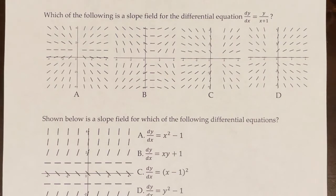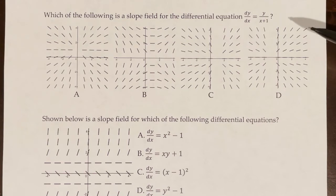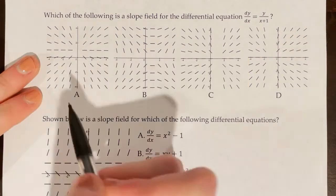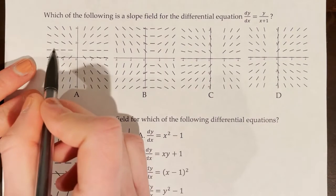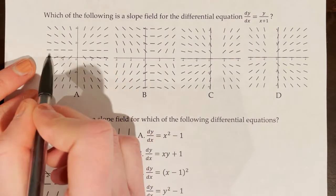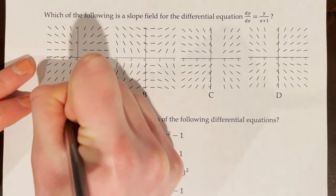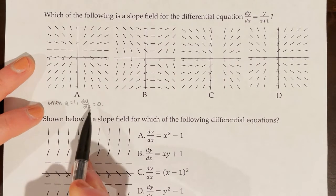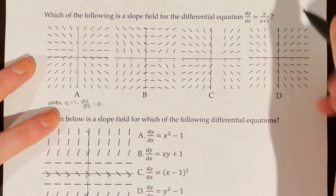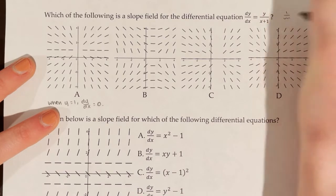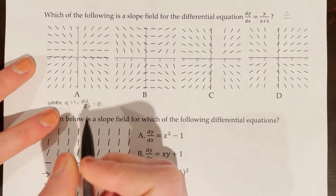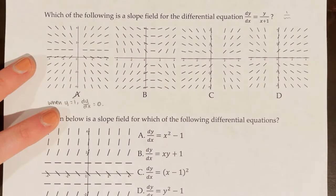Which of the following is a slope field for the differential equation dy/dx = y / (x + 1)? A helpful strategy is to identify where we have horizontal lines and where dy/dx is undefined. Looking at choice A, we have horizontal lines at y = 1, meaning dy/dx = 0 when y = 1. But plugging y = 1 into y / (x+1) gives 1 over some number, which is not 0. Therefore choice A is not correct.